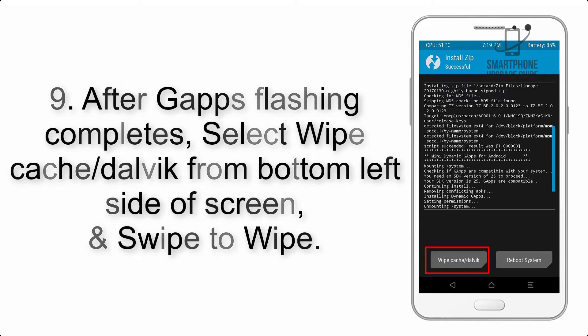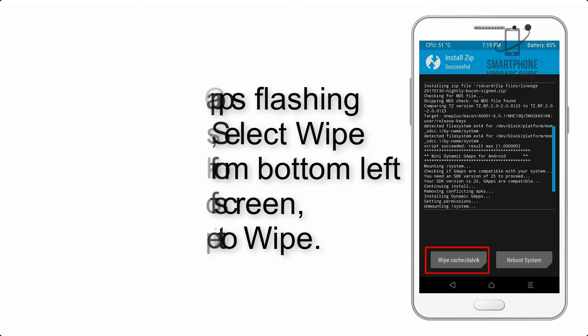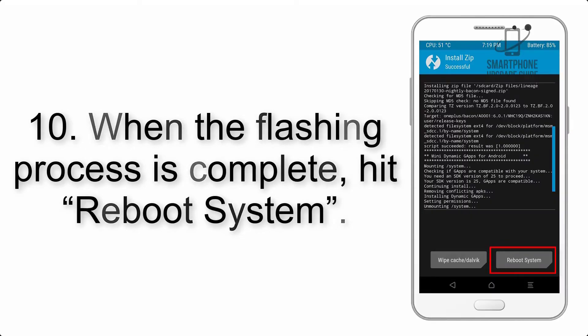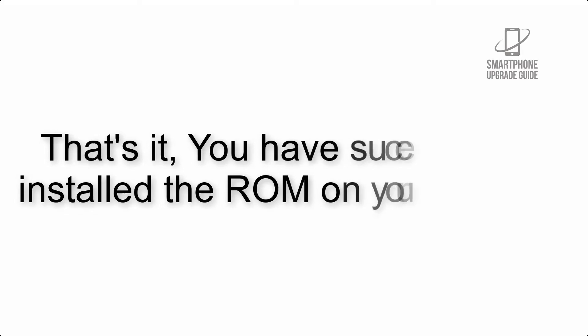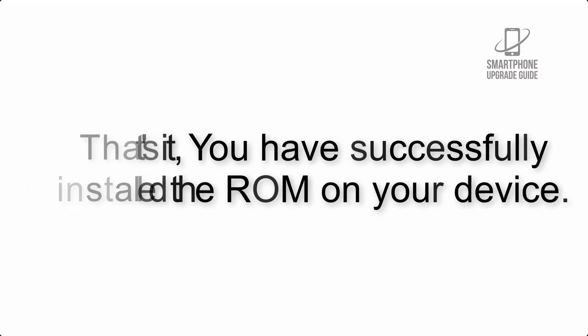Step 9: After GApps flashing completes, select Wipe Cache and Dalvik from the bottom left side of the screen and swipe to wipe. Step 10: When the flashing process is complete, hit Reboot System. That's it — you have successfully installed the ROM on your device.